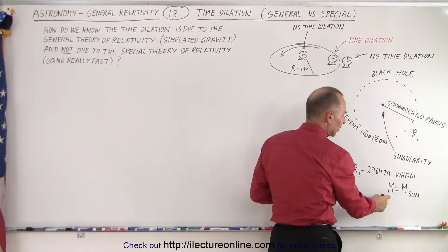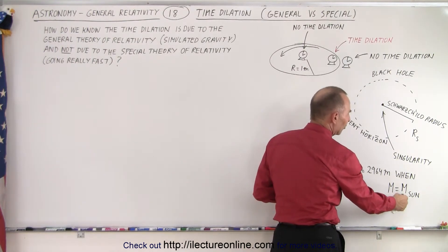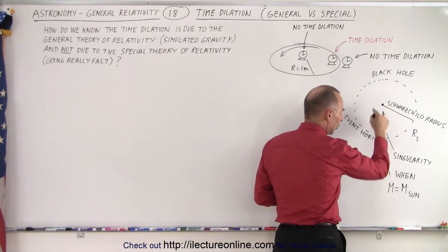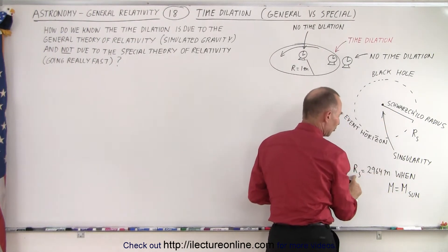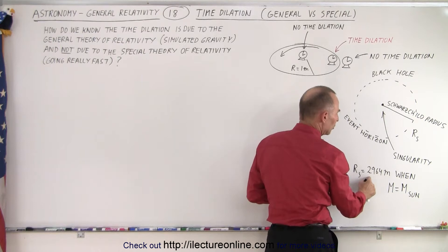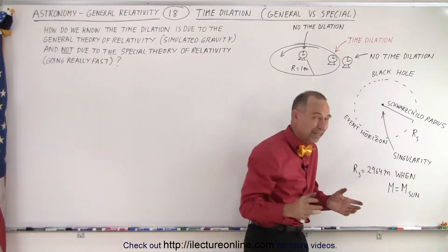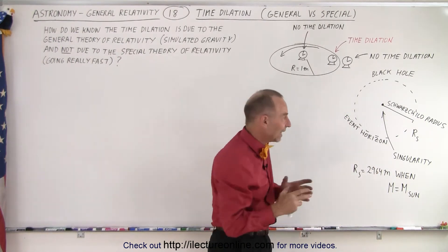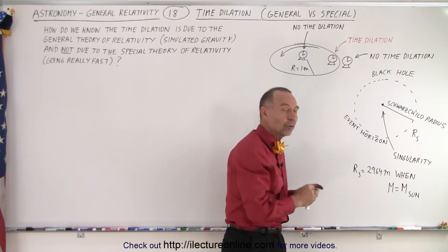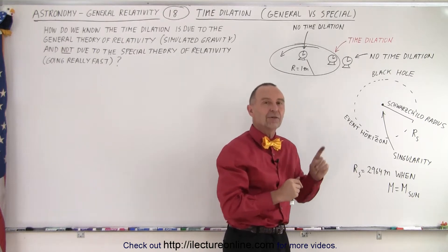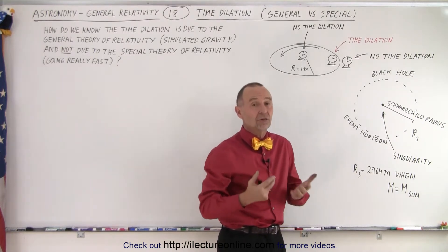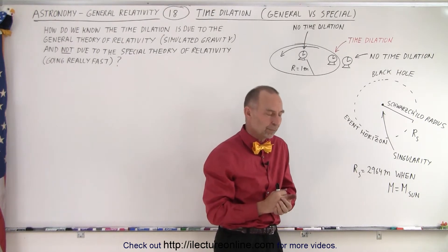If the mass is equal to the mass of the Sun inside the black hole, then the Schwarzschild radius would be 2,964 meters. So we can calculate the forces and the acceleration due to gravity at the event horizon in such a situation.